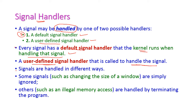Signals are handled in different ways. Some signals can be simply ignored — for example, changing the size of a window can simply be ignored and will not cause any problem. Some signals are handled by terminating the program — for example, if an illegal memory access signal occurs, we have to handle that particular signal.